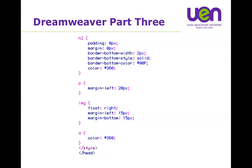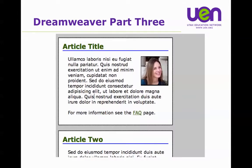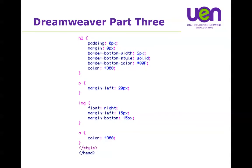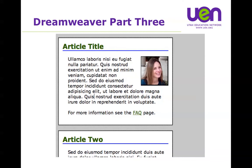Remember that blue bottom border that goes all the way across? That's not an underline - that's actually a border, because that H2 tag forms a box. Because it's a block, I can use CSS to turn the borders on or off. In this case, I told it I just wanted a bottom border, and I could define what that bottom border looked like: two pixels wide, solid, and that blue color. You can also see it says color equals pound 360, which is the text color - that's that green color.